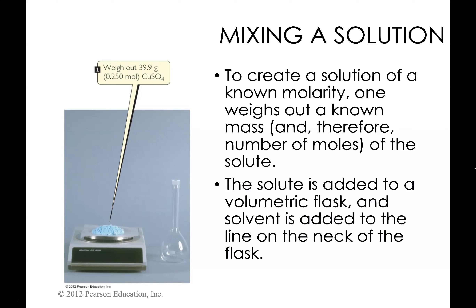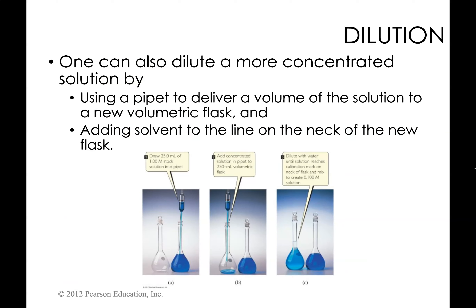Here we have an example of how to make a solution. An amount that has been weighed out is added to a volumetric flask. On these volumetric flasks there is a line marking an exact volume measurement. For example, a 100 mL volumetric flask — if we add our solid and fill it to the line with water, we know we have exactly 100 mL of solution. This illustrates the precision we use in the lab.